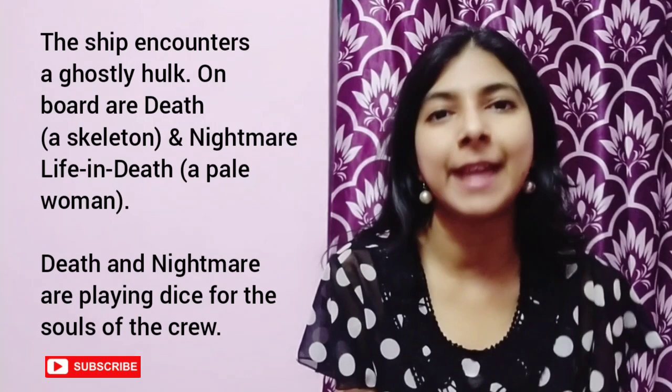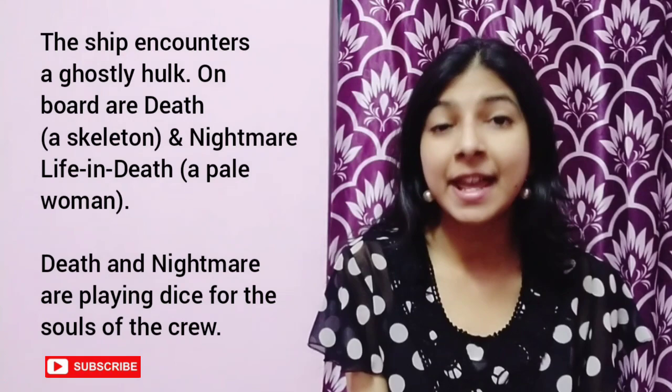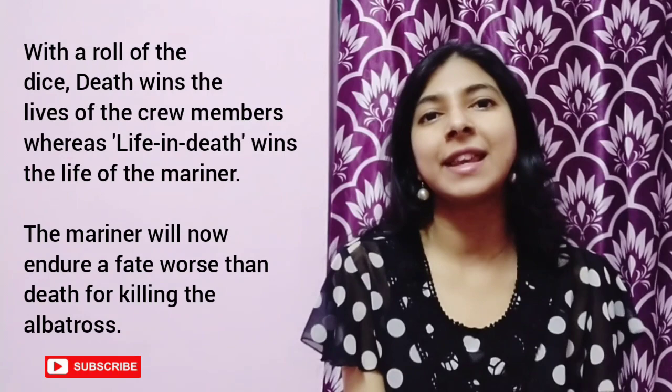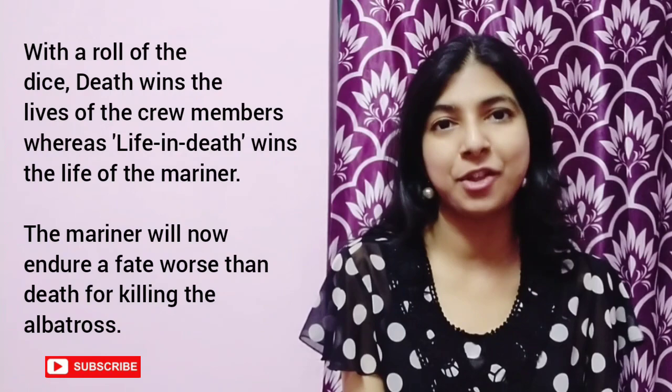After a long, tiresome time, they see a ghostly ship approaching them. On board are Death, a skeleton, and Nightmare Life-in-Death, a deathly pale woman. Death and Nightmare are playing dice for the lives of the crew members. With the roll of the dice, Death wins the life of all the crew members, and Nightmare Life-in-Death wins the life of the Mariner — a prize she considers more valuable. The name Life-in-Death itself is an indication of the Mariner's fate.